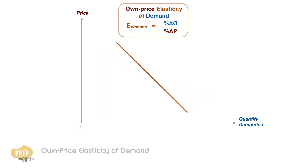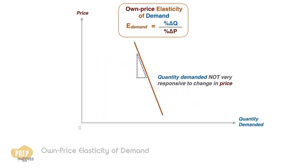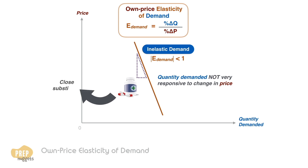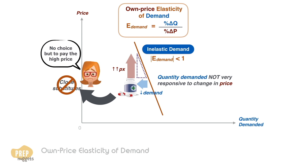In contrast, when the quantity demanded is not very responsive to a change in price, we say that demand is inelastic. The absolute value of elasticity is less than 1. For example, if a pharmaceutical drug has hardly any close substitutes, the demand for it will just drop a little even when the manufacturer increases price by a lot. Consumers have no choice as the drug is necessary to maintain their health.